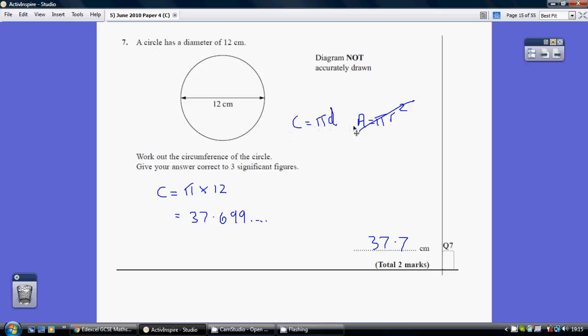Cottage pies delicious. Apple pies R2. This one's to work out the circumference. This one is to work out the area.